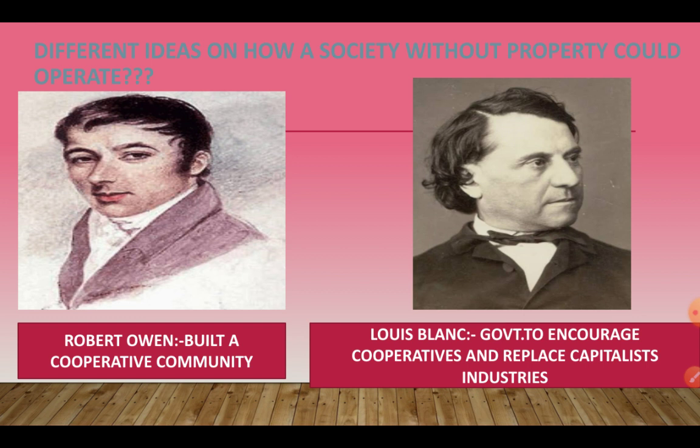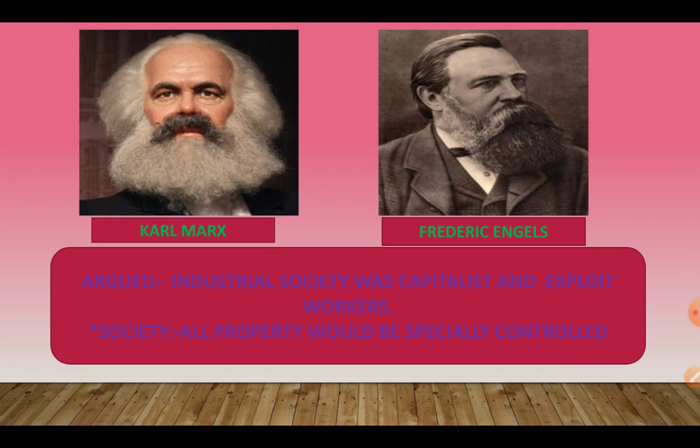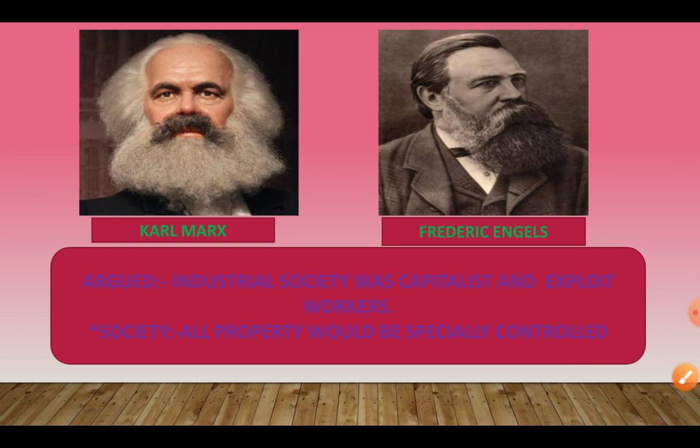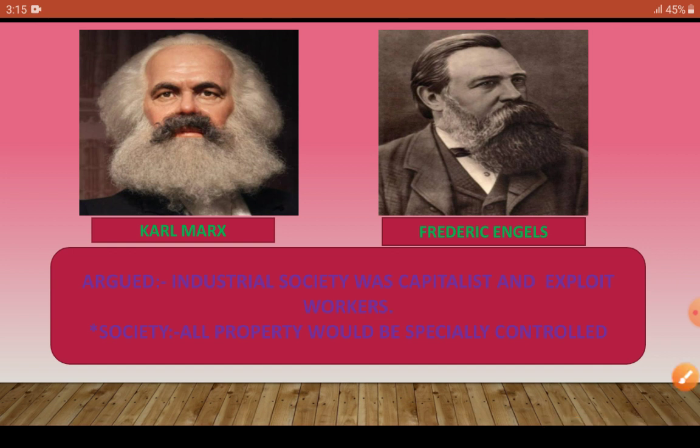Louis Blanc wanted to encourage cooperatives and replace capitalist industries — he wanted to remove capitalist enterprises and establish cooperative societies in their place. Karl Marx and Friedrich Engels argued that industrial society was capitalist and exploited workers. They thought capitalists kept more and more money for themselves and exploited the workforce. They believed all property should be collectively controlled by society.